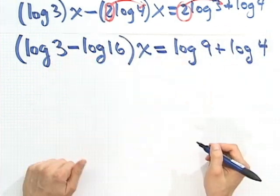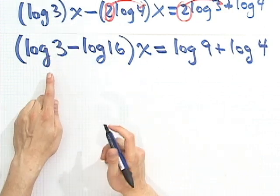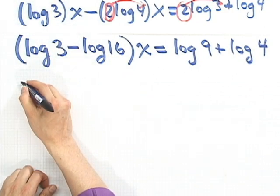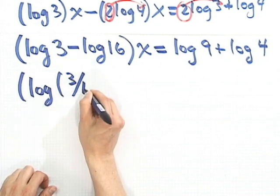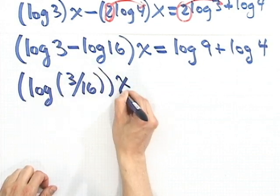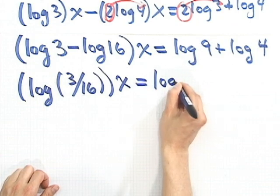Now I can actually combine a lot of these guys. I see the difference of logs. Remember, that's the log of the quotient. So I could write this as log of 3 divided by 16x. And that will equal log of,